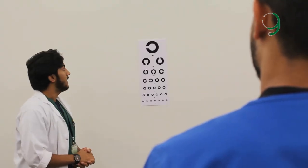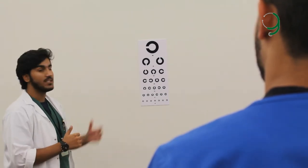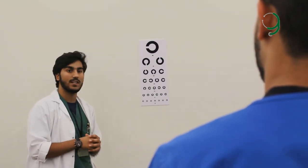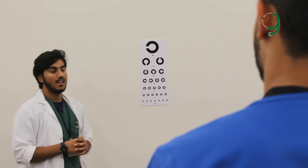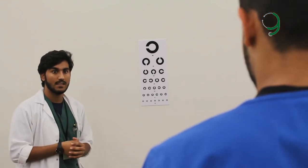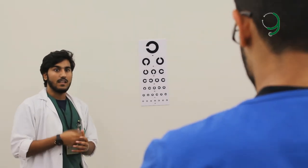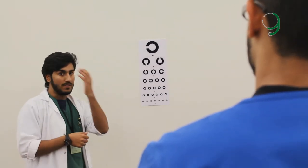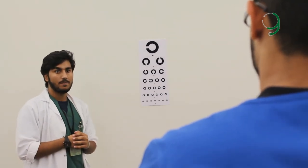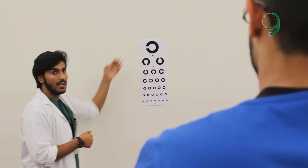Next is the visual acuity examination. First, you have to ensure good lighting. Then ask the patient to position himself six meters away from the Snellen chart. Then ask the patient to put on his glasses. Can you please put on your glasses? Then ask him to cover one of his eyes.